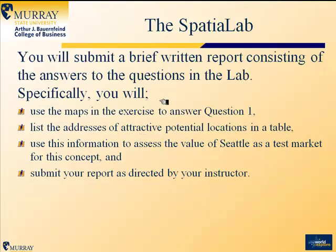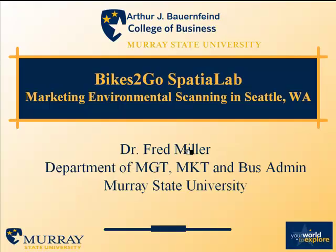As a submission, you will submit a report which includes the addresses of the attractive potential locations that you have identified. You will use the maps to get this information, and then, based on what you have discovered, you will assess the value of Seattle as a test market for the concept and submit your report to your instructor. That will complete your work in the Bikes2Go Spatial Lab.